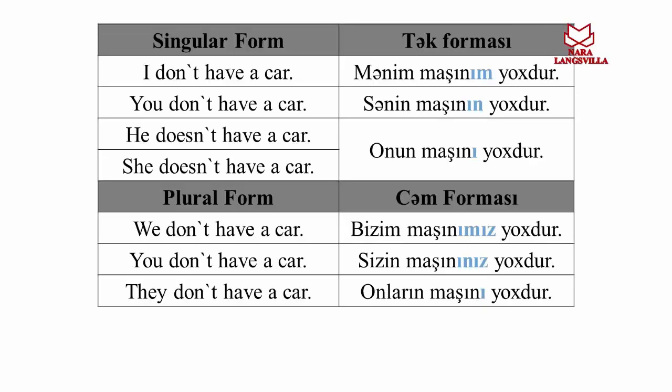Now I will give full negative answers to the previous questions. Singular form — tək forması. I don't have a car. Mənim maşınım yoxdur. You don't have a car. Sənin maşının yoxdur. He/she doesn't have a car. Onun maşını yoxdur.